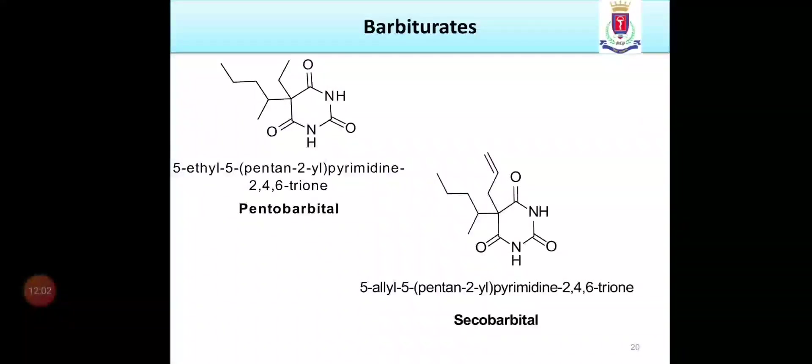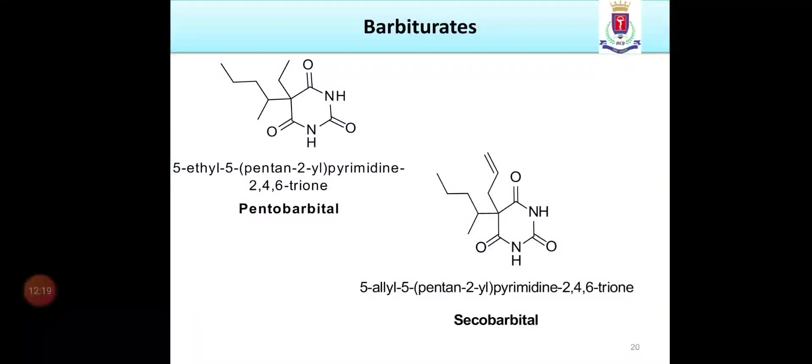Next barbituric acid derivative is pentobarbital. The pentobarbital, the 5 position hydrogen is replaced with ethyl and 2nd hydrogen is replaced with pentane-2-yl and the rest of the structure, that is pyrimidine 2,4,6 trione is the same. In secobarbital, the 5 position hydrogen is replaced with allyl and 2nd hydrogen is replaced with pentane-2-yl and the rest of the structure, that is basic nucleus pyrimidine 2,4,6 trione is again common.